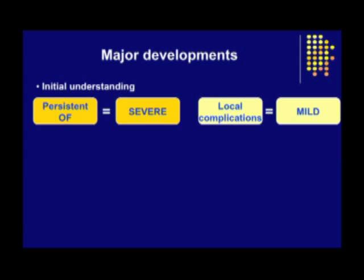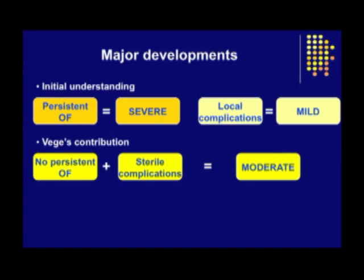It was therefore suggested that only patients with persistent organ failure should be defined as having severe acute pancreatitis, while all other patients, including those with local sterile and infectious complications, be defined as having mild acute pancreatitis. Recently, the research group from the Mayo Clinic led by Dr. Badger provided sound evidence to justify the introduction of a moderate category of acute pancreatitis.